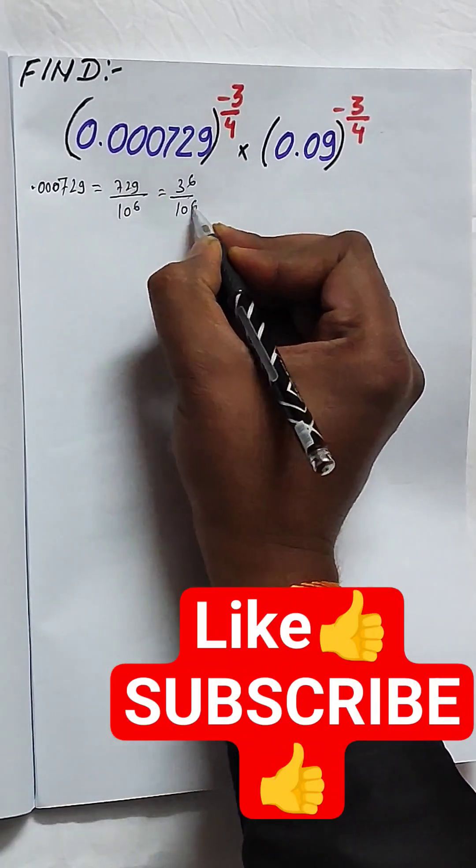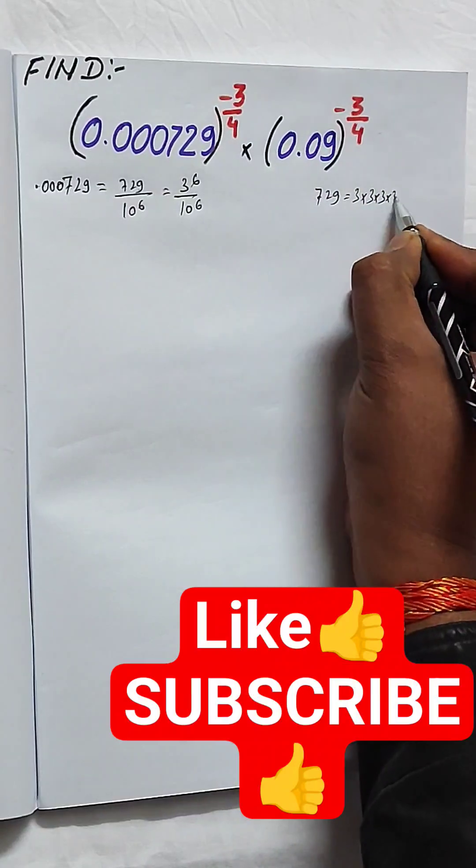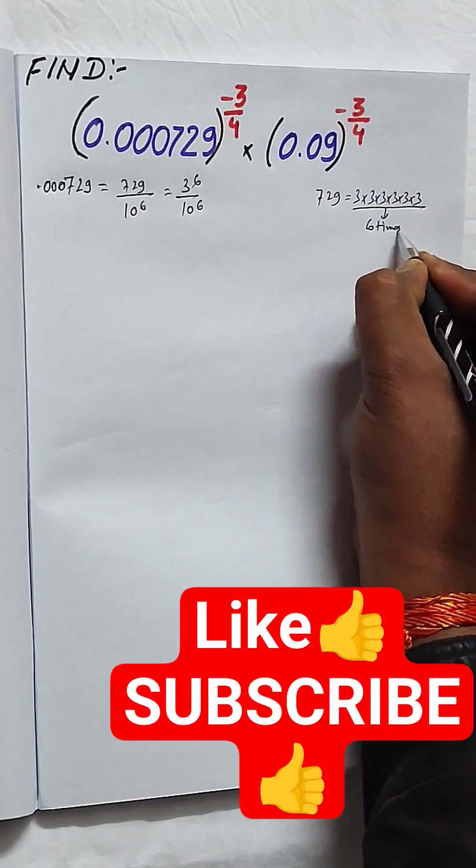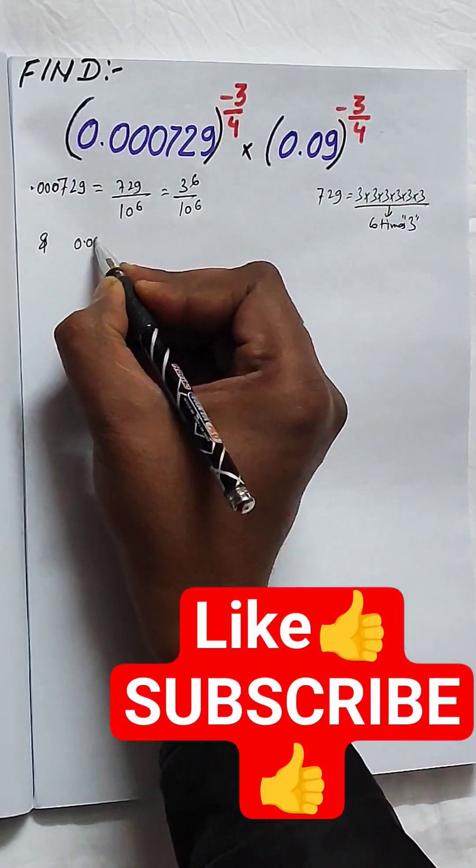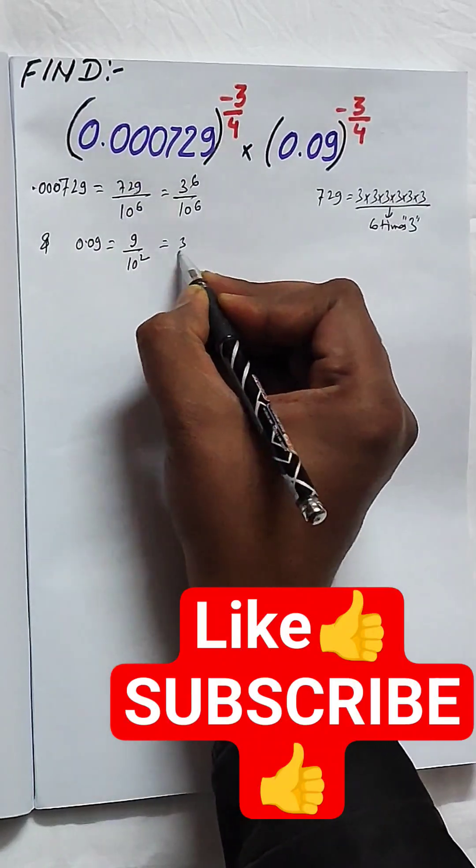So 0.000729 can be written as 729/10^6, which is equal to (3/10)^6.